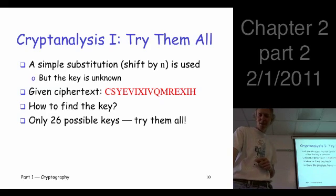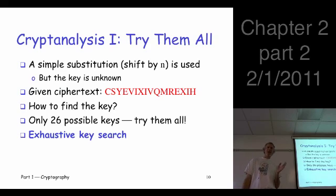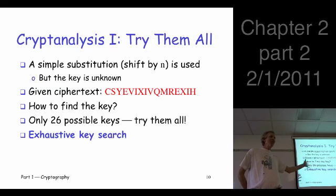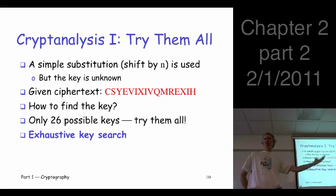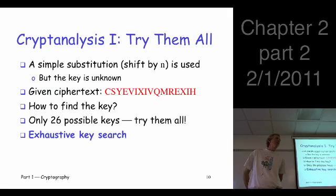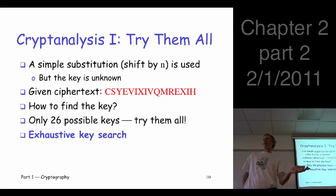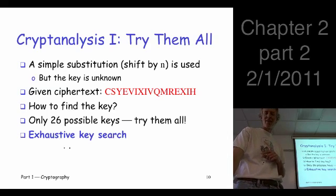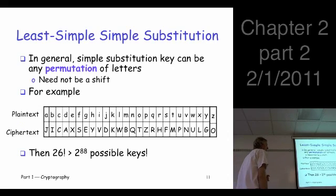We can't just call it 'brute force try them all' — this is cryptography, so we call it an exhaustive key search: try all possible keys. If you're Trudy, you can always attempt this attack because you know the algorithm and you know the possible keys. Turn that around: if you're going to build a cipher system, the first thing that has to be true is it must have a large number of keys — so many keys that Trudy cannot possibly try them all. Rule number one: large key space.